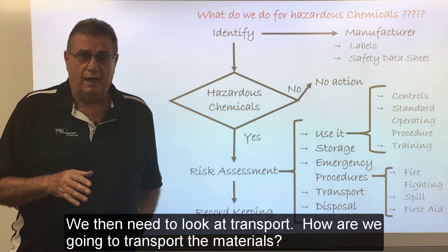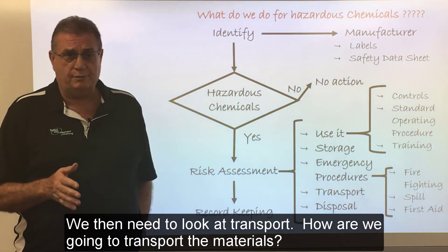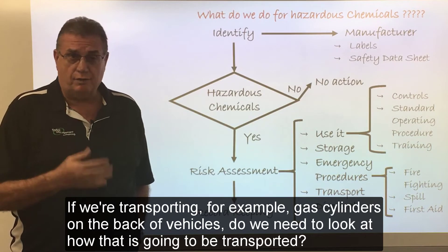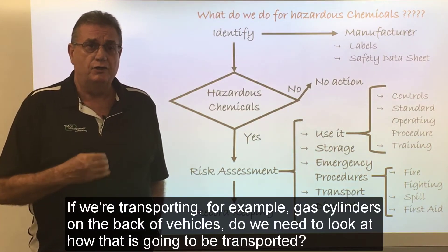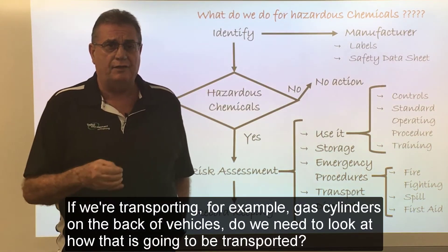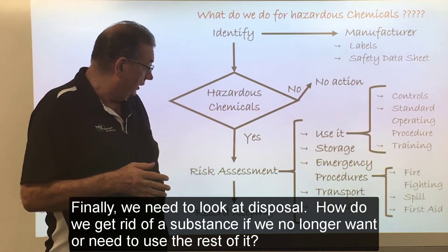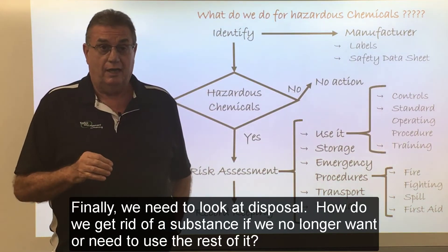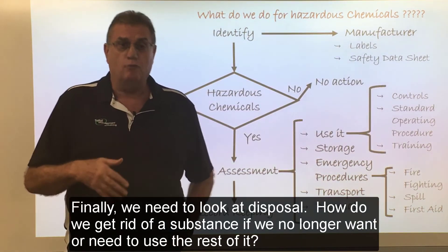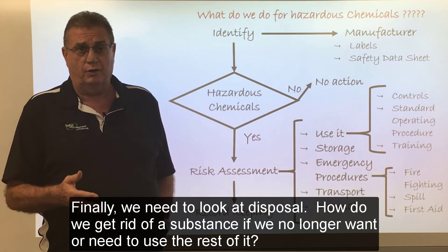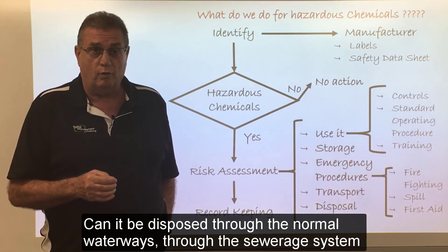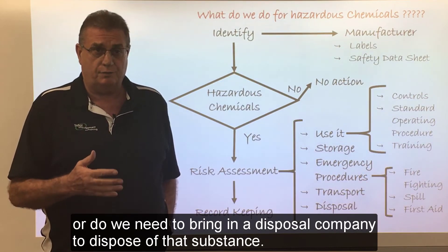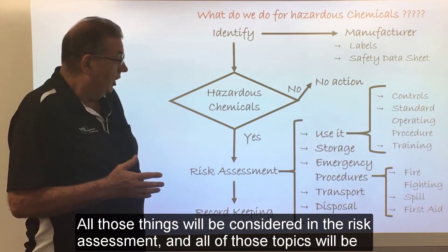We then need to look at transport. How are we going to transport the materials? For example, if we're transporting gas cylinders on the back of vehicles, we need to consider how that is going to be done safely. And finally, we need to look at disposal — how do we get rid of a substance if we no longer need it? Can it be disposed of through the sewerage system, or do we need to bring in a disposal company?